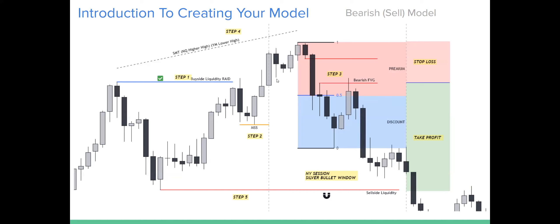Step two: we need to see an energetic displacement lower, shifting underneath an old low. In here we have a higher high, a higher low, higher high — then price is shifting from an uptrend down to a downtrend, shifting underneath that low. See how we close underneath this low? That's step two.